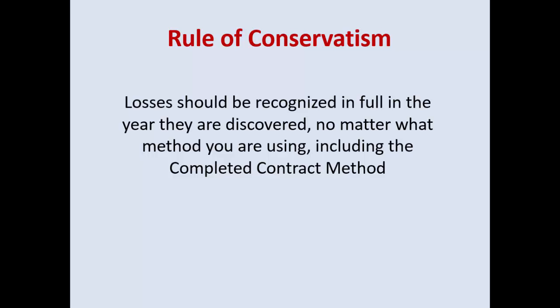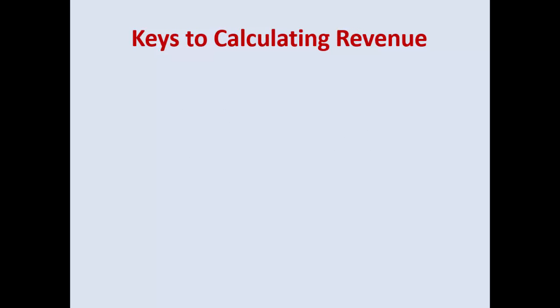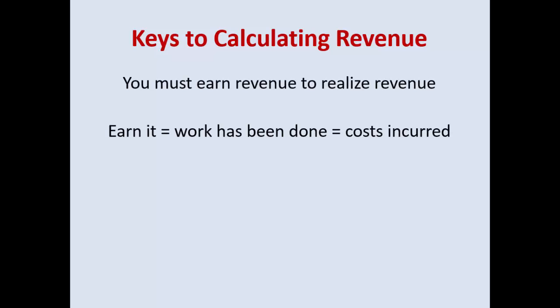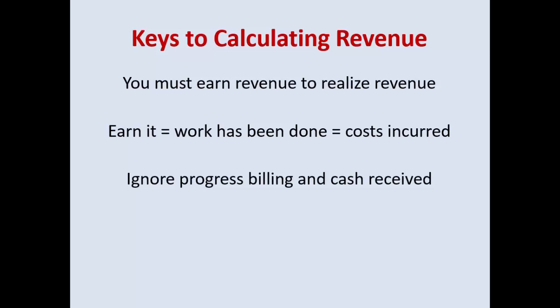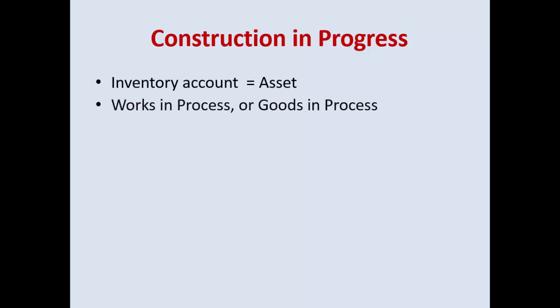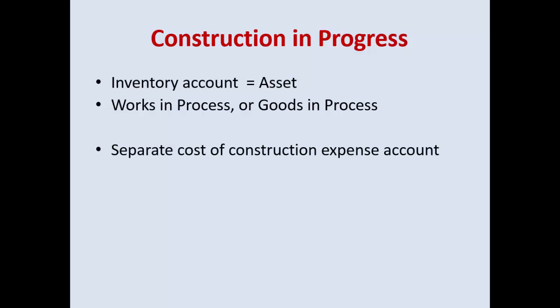The rule of conservatism will always exist. If you have a loss, even if you're using the completed contract method where you don't record any revenue until you're done, you have to record the loss immediately. The key to calculating revenue: you have to earn it first — the work has been done. You'll have a lot of extra information; ignore progress billing and cash received and focus on actual cost incurred.